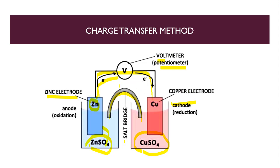In the zinc solution, zinc ions move away from the electrode while sulfate ions move towards it. Positive ions move towards the right side of the salt bridge and negative ions move towards the left side. On the electrode surfaces there is electron transfer. Ultimately, zinc is dissolved and metallic copper is deposited.